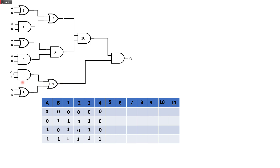Gate 5 is the same as gate 4 — also an AND gate: 0, 0, 0, 1. Gate 6 is an OR gate — same as gate 3, which is also an OR gate: 0, 1, 1, 1.